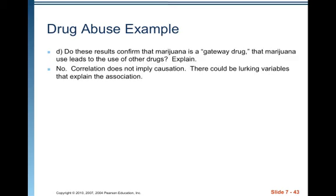Do these results confirm that marijuana is a gateway drug — that marijuana use leads to the use of other drugs? No. Correlation does not imply causation. There could be lurking variables that explain the association. We don't even know which came first — someone could have tried other drugs first and also tried marijuana along the way. There could be a cause and effect relationship, but we haven't established it. To establish it, you would need volunteers randomly assigned to smoke marijuana or not, then observe future drug use — but that would not be ethical, so that experiment simply cannot be done.